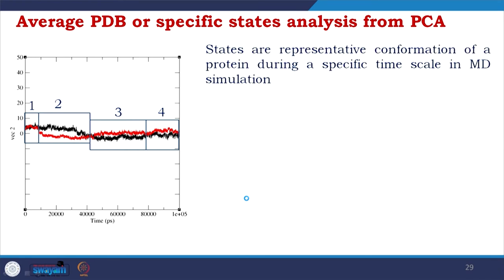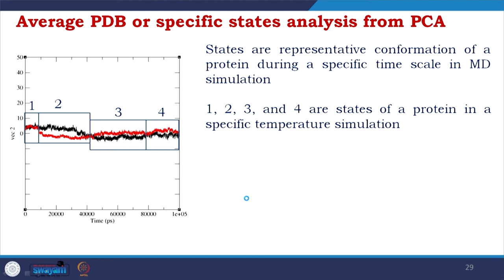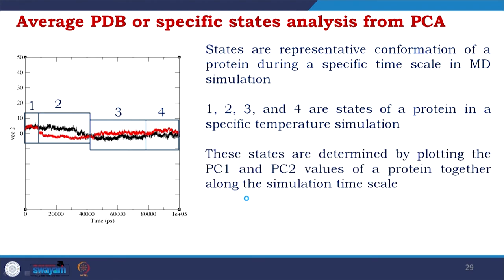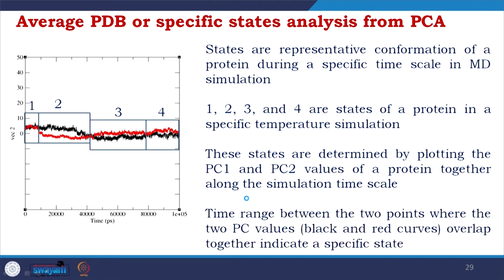The states are representative conformations of a protein during a specific time scale in MD simulation. You see states 1, 2, 3, and 4 of a protein in a temperature simulation, with eigenvector 2 plotted versus time. These states are determined by plotting PC1 and PC2 values of a protein together along with the simulation time scale. The time range between two points where the two principal component values overlap together indicates the presence of a specific state.